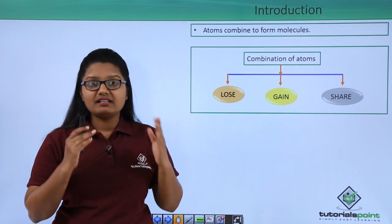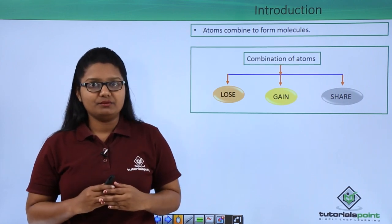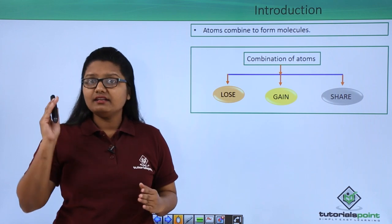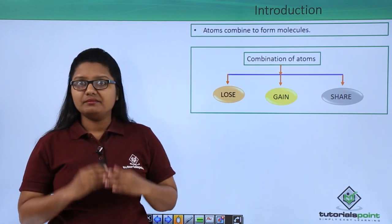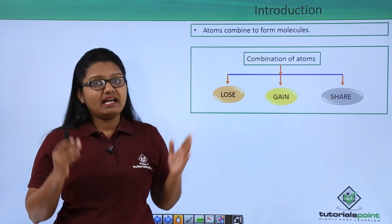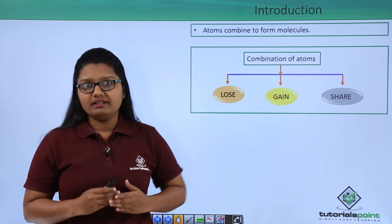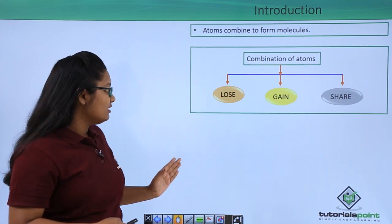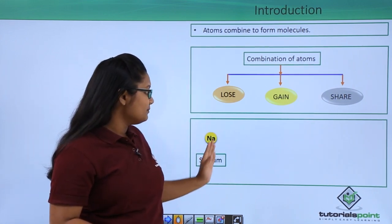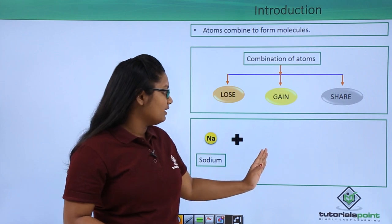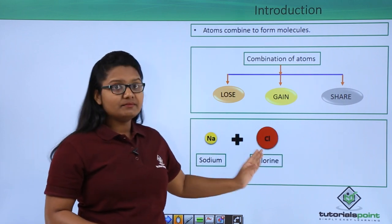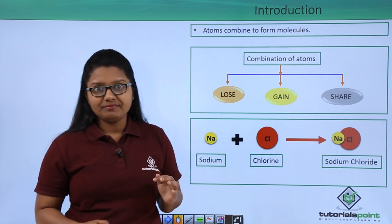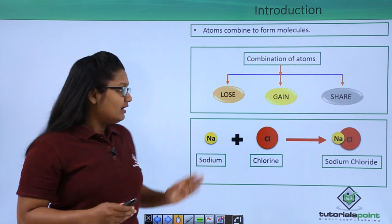Ionic compounds have a metallic atom and a non-metallic atom in them. A commonly known ionic compound is the common salt, that is sodium chloride, which is formed out of a sodium atom and a chlorine atom. When these two atoms combine they form common salt, that is sodium chloride. Now let us zoom into this reaction and see what happens.